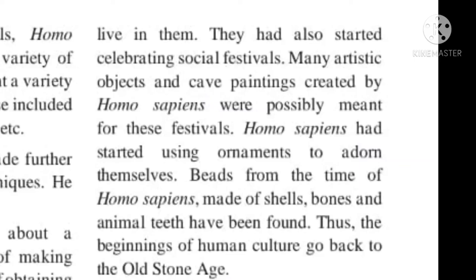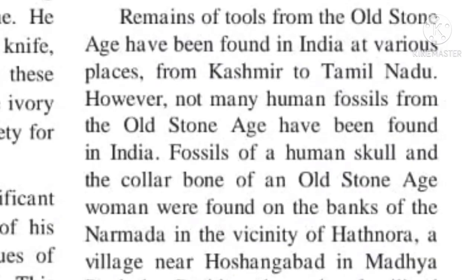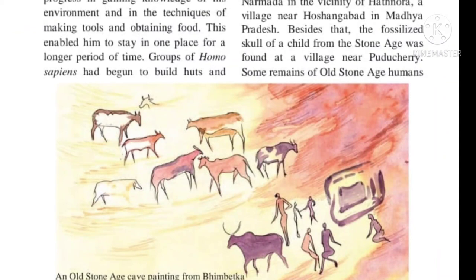Remains of Old Stone Age tools were found in many places from Kashmir to Tamil Nadu. Very few fossils of humans are found in India. Fossils of a human skull and the collarbone of a woman have been found near Hattnura, a village in Madhya Pradesh on the banks of the river Narmada. A fossil of a child's skull from the Old Stone Age was found at a village near Puducherry. Human remains of Old Stone Age man have been found in Afghanistan and Sri Lanka as well. In Maharashtra, Old Stone Age sites are found at Gangapur on the banks of river Godavari near Nashik, and at Chirki-Nevasa in the Pravara Basin near Nevasa. The above slide shows an Old Stone Age cave painting from Bhimbetka.